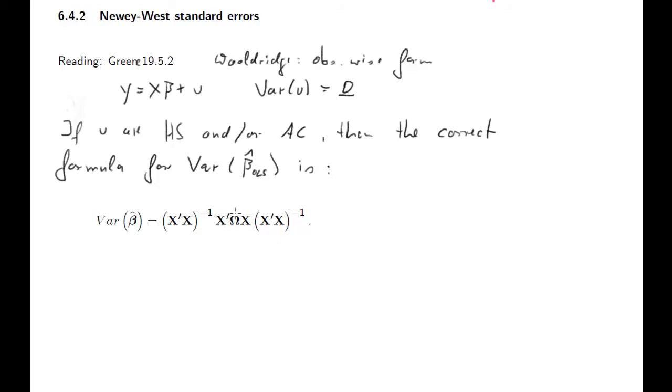So this is where we are. In practice, however, we need an estimate for omega, because omega, our variance-covariance matrix of u, is unknown. Because it's unknown, that's why we had to test whether it is described by heteroscedasticity and or autocorrelation. If we knew what omega was, we could immediately see whether the values on the diagonal are different and whether there are non-zero values on the off-diagonal, which would indicate autocorrelation. So in practice, we need an estimate for omega.